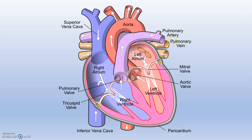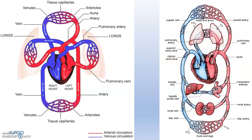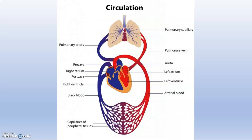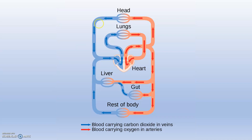This is actually the anatomy of the heart. These are the valves — this is the left atrium, left ventricle, right ventricle, right atrium — and you can see the aorta, and from the right ventricle you can see the pulmonary artery and pulmonary veins. This is the image of circulation. You can see the left heart and right heart. The red represents blood carrying oxygen in the arteries, and blood carrying deoxygenated blood is represented in blue.